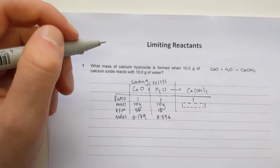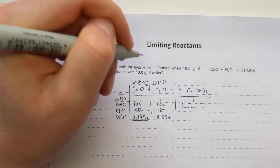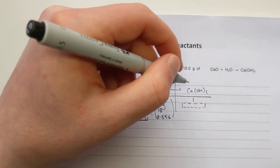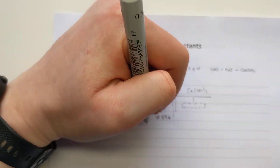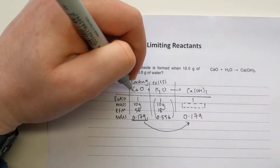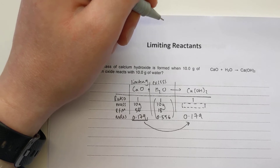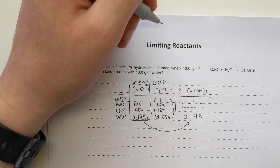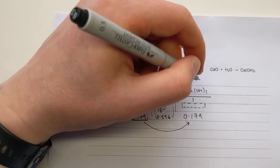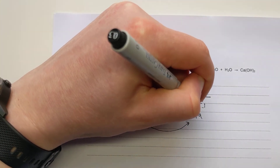The rule is that the limiting reactant determines how much product you make, so I use the moles of the limiting reactant and ignore the excess. It's a one-to-one ratio for calcium oxide to calcium hydroxide, so 0.179 moles of calcium oxide makes 0.179 moles of calcium hydroxide. Converting back to mass using mass equals moles times RFM: the RFM of calcium hydroxide is 40 plus 16 plus 1 twice, which is 74. Multiplying gives a final answer of 13.2 grams.